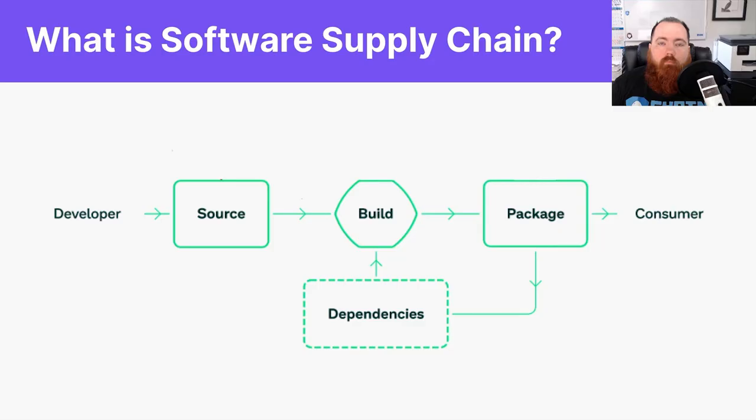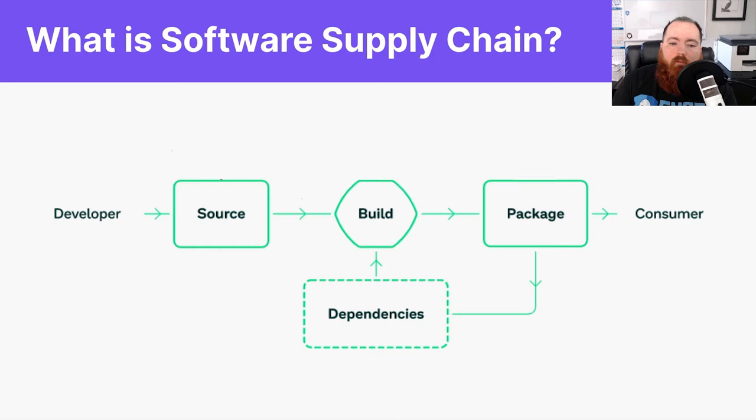But first, let's discuss what is a software supply chain. I like to think of it as everything that is involved with the development, building, and packaging of software between the enterprise and the consumer of software. So it includes the source where the code lives, how we build and package the software, all of the testing frameworks, and all of the dependencies that are injected during build time.